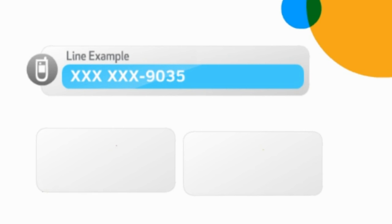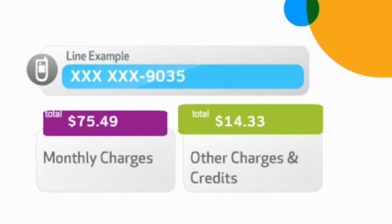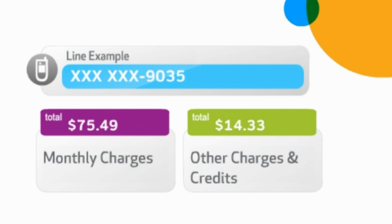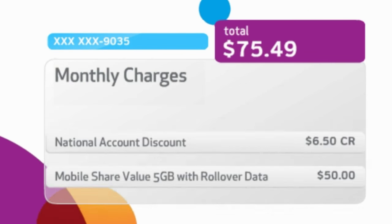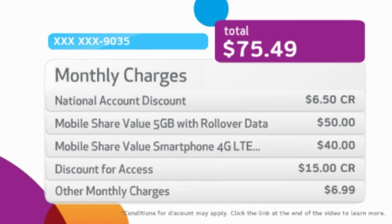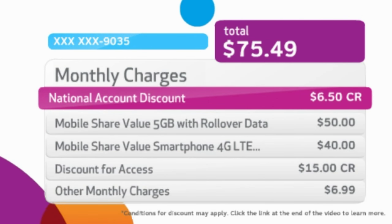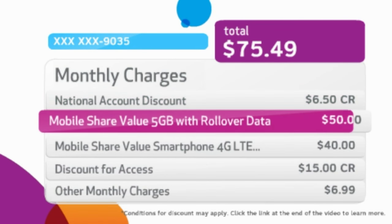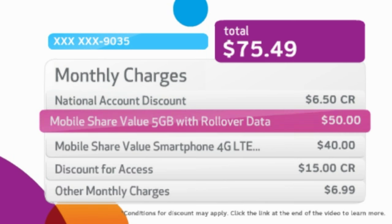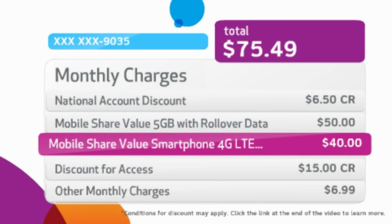Each of your lines is usually split into two sections. Your monthly charges, which are billed one month in advance, where you can also see the discount you received, thanks to your national account discount.